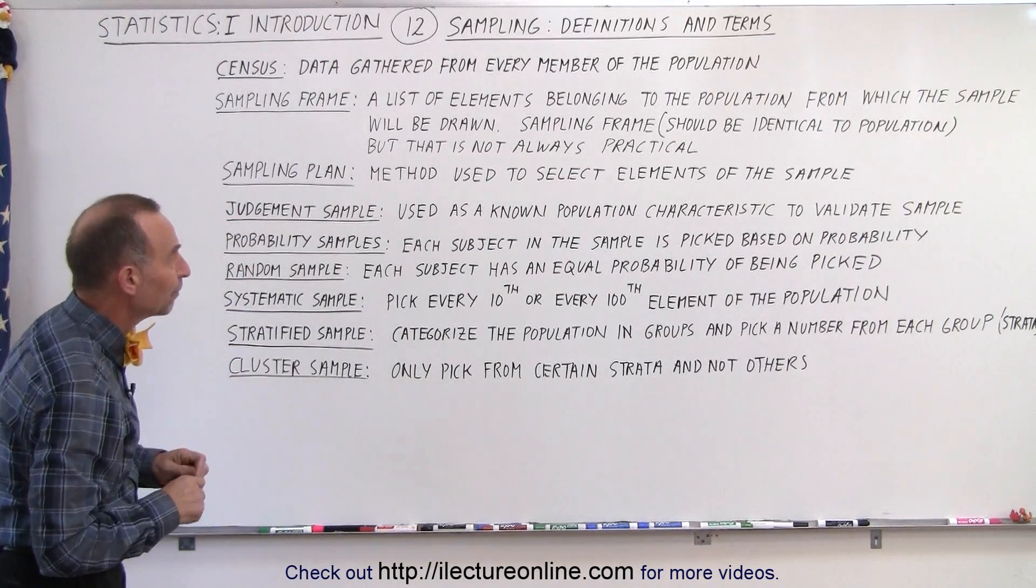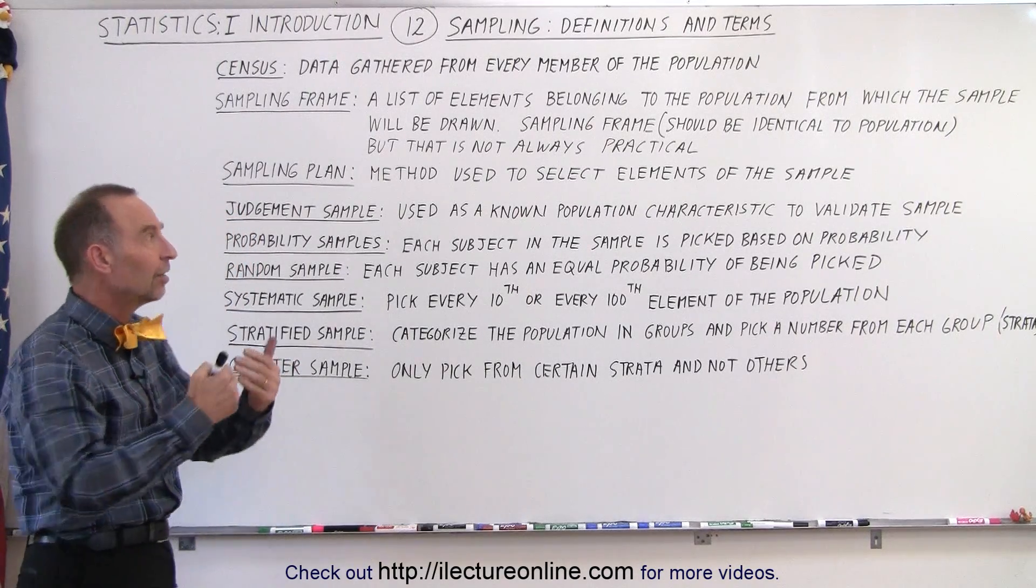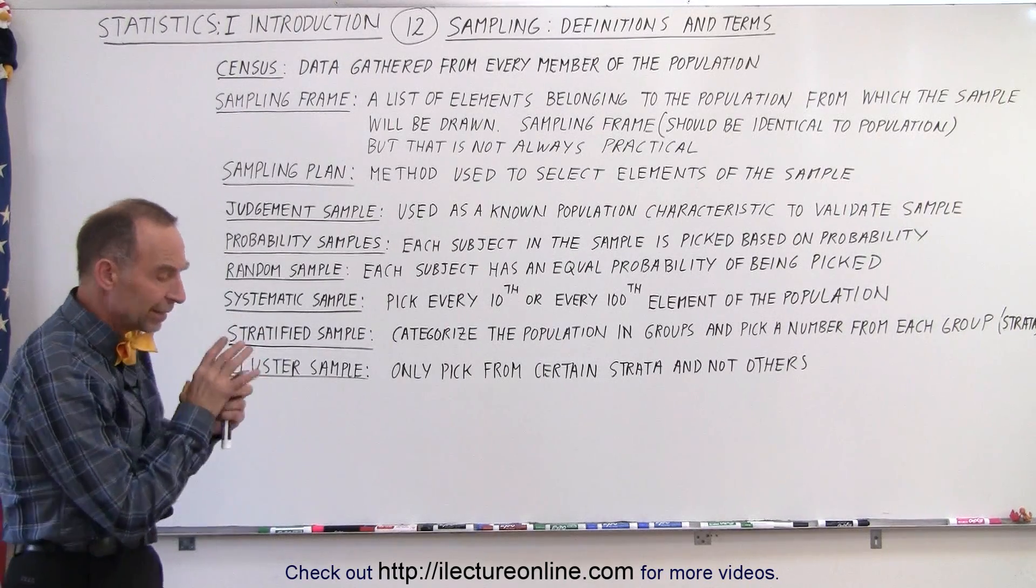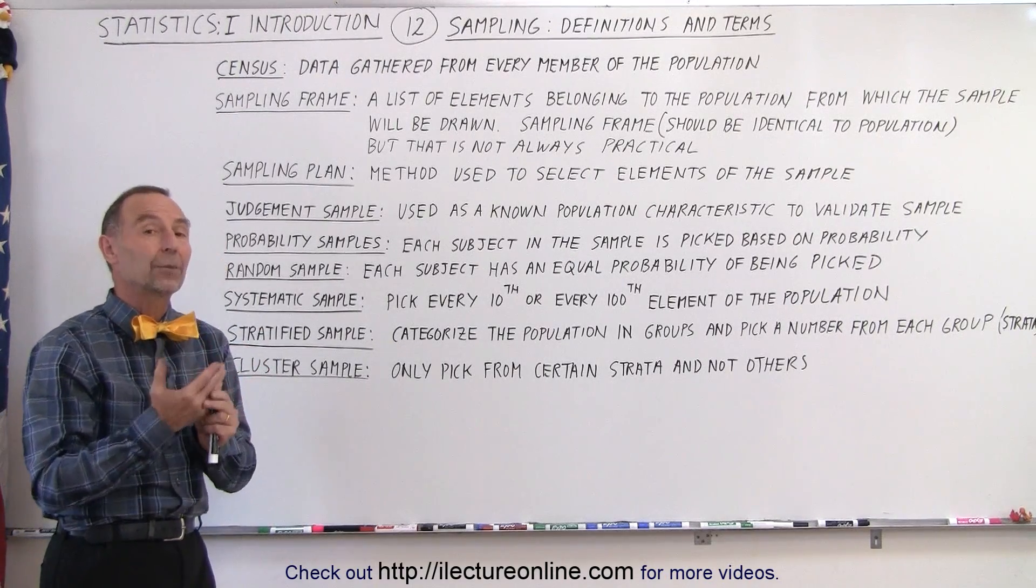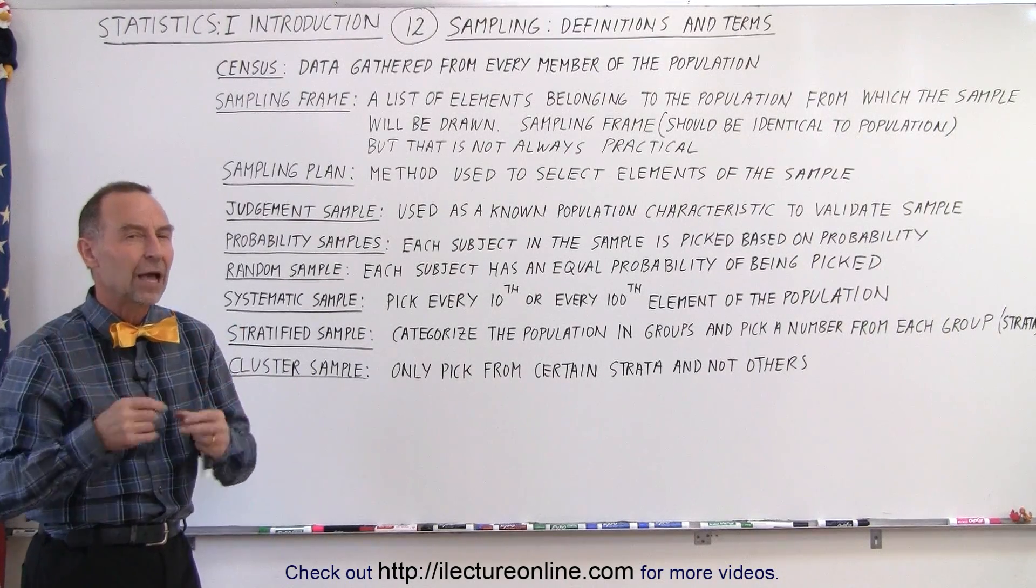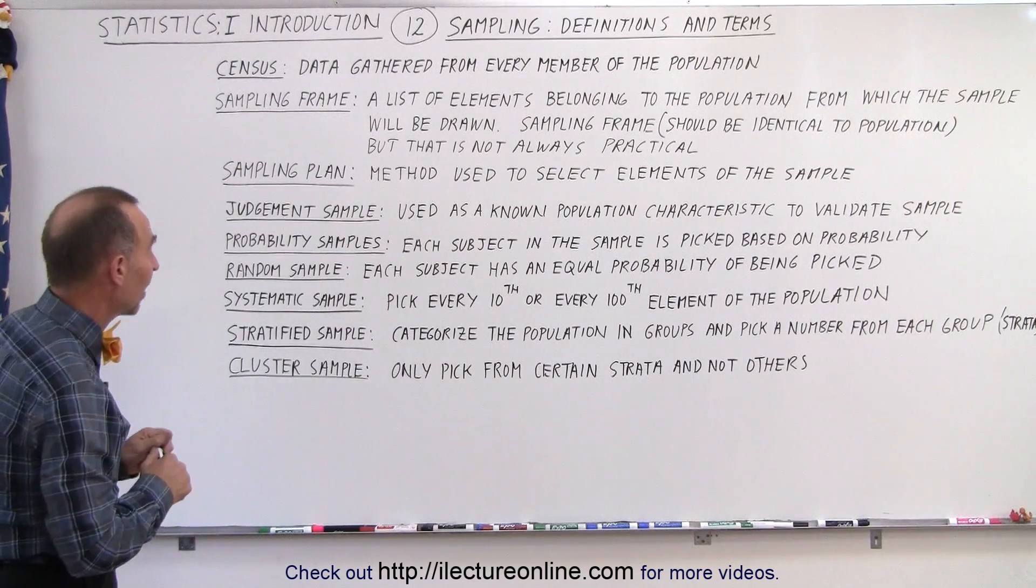The sampling plan. That is the method that is selected to select the elements of the sample, or the method that we use to select the elements of the sample. So you want to plan that. You don't want to do it at random. You want to find out specifically how you're going to set up the sample.